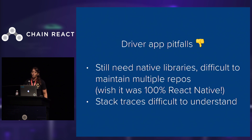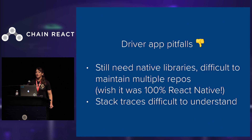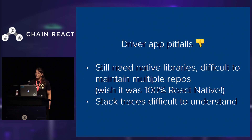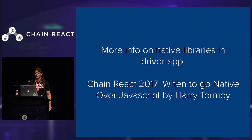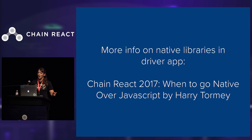We do have a couple of pitfalls. Number one, we still need to have native libraries that we created — the JavaScript bridge is not particularly resilient to long-running background processes, so we had to create some native libraries to accommodate that. We have about five repos that we maintain and really wish it could just be 100% React Native. The other issue is that stack traces are pretty difficult to understand. Drivers aren't always the most technical people in describing what went wrong, and we just look at Crashlytics. If you want to learn more about the native modules in our driver app, check out a Chain React talk from last year by Harry Tormey.